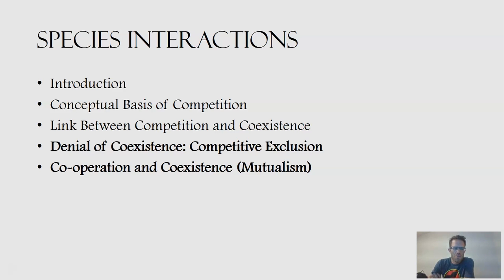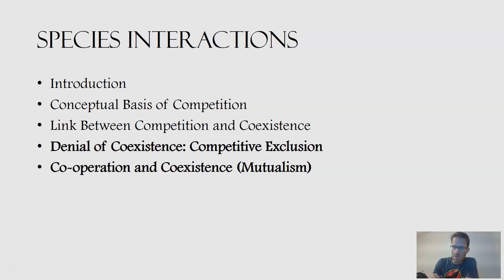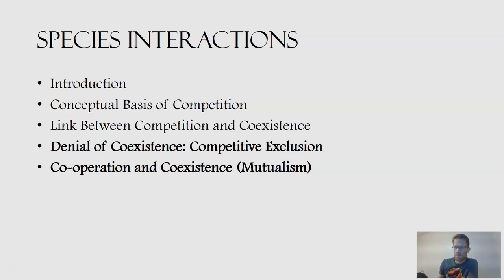Okay, video two for species interactions. So we talked about the introduction for species interactions, the conceptual basis for competition, and the link between competition and coexistence, because it is possible for individuals and species to compete yet still coexist. So now let's dive into competitive exclusion, which is the denial of coexistence, and then we'll switch gears into mutualism.